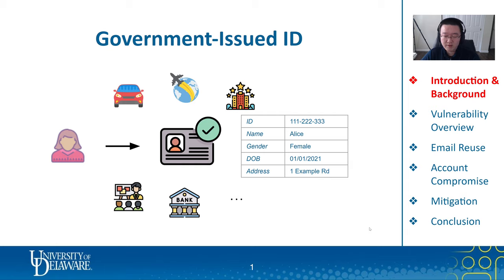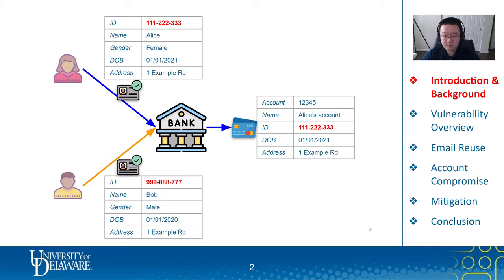On the other hand, from the service provider's perspective, things may get a little bit complicated. For example, Alice goes to the bank to access her bank account and she shows her ID to the bank. In normal operation, the bank checks Alice's ID and sees that her ID number is 111222333. The bank finds Alice's banking account by searching for an account in their system with the same ID number. This procedure ensures that if another person, Bob, goes to the same bank with his ID, he cannot access the same account. The entire process is considered secure based on the assumption that the ID number is unique, and one specific ID number can only be used by one person. But what happens if we break this assumption?